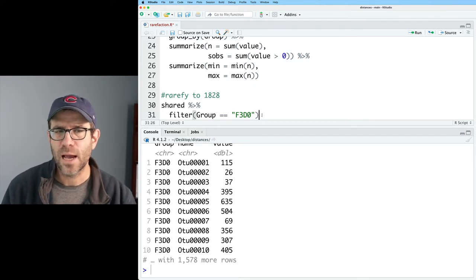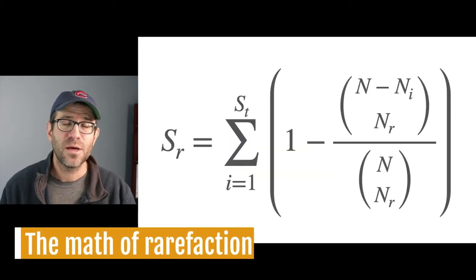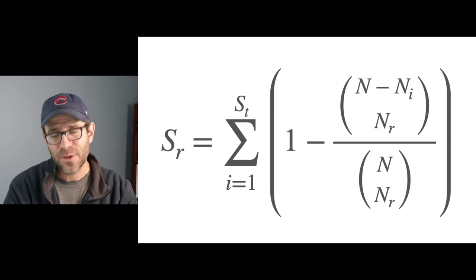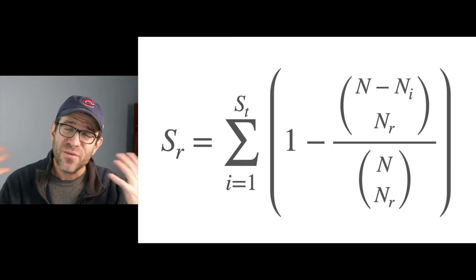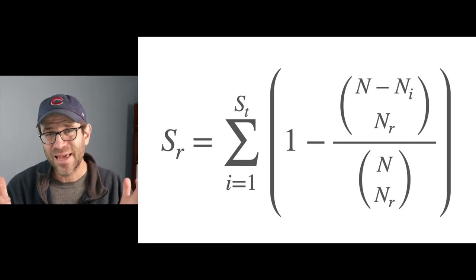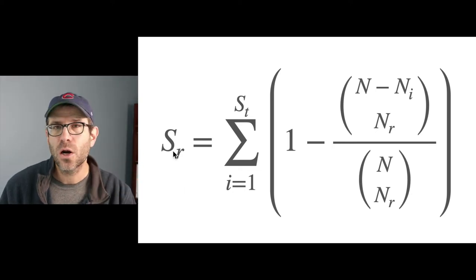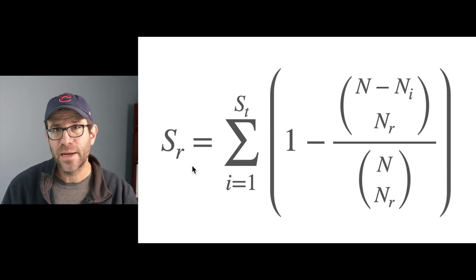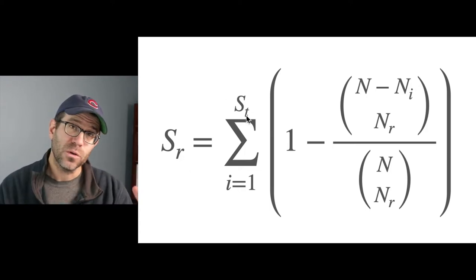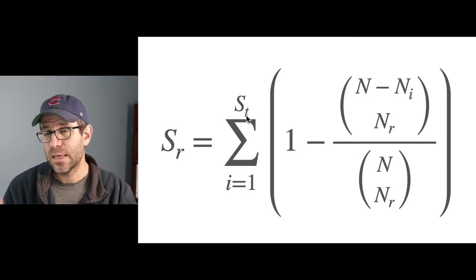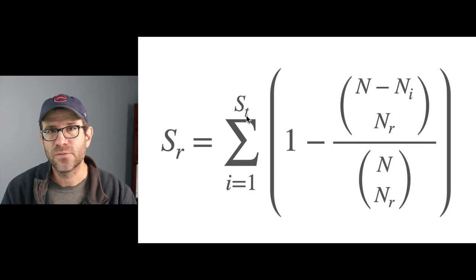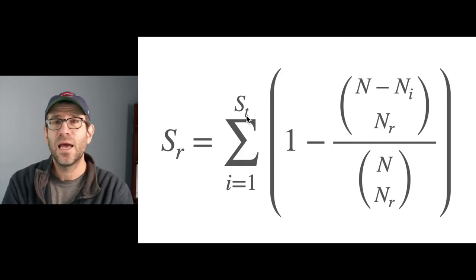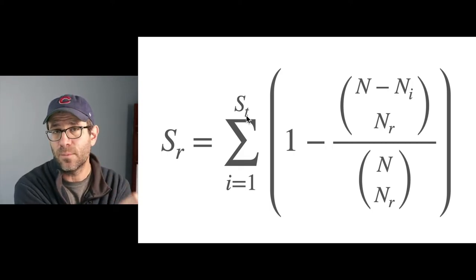Here I have the formula for calculating the estimated number of taxa we would see for a smaller sample size. SR is the estimated number of species or taxa we would have for the reduced or rarefied dataset. ST is the total number of observed OTUs in the observed dataset with the full collection of sequences — say we had 6,000 sequences, the number of OTUs we'd have for 6,000 sequences would be ST. If we wanted to go down to 1828, SR would be the number for 1828. N (capital N) is the total number of sequences — so again, 6,000 in that example — whereas NR is the reduced or rarefied value, which would be 1828.